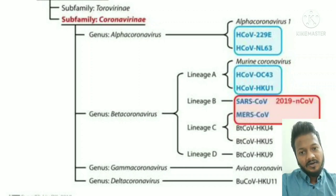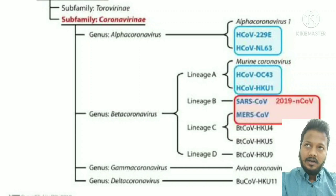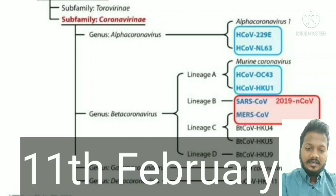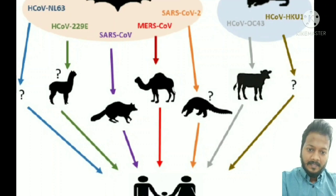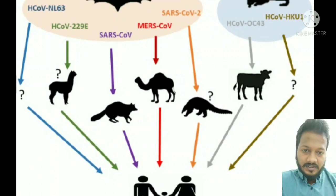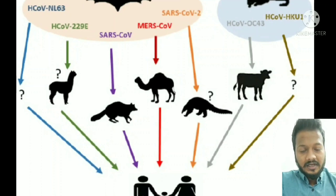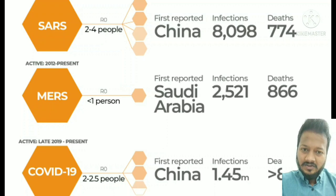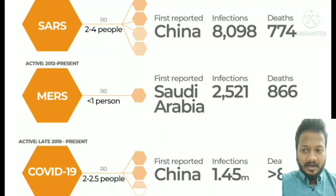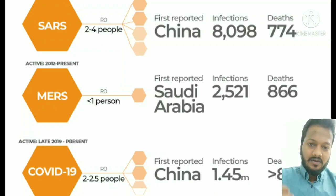Initially we named it novel coronavirus, but later around 11th March 2020, WHO declared the name as SARS-CoV-2. SARS-CoV, MERS-CoV, and SARS-CoV-2 — all three cause acute respiratory distress syndrome in humans. Let us look at the past of various corona outbreaks: 2002 by SARS-CoV, 2012 MERS-CoV, and in 2019 by SARS-CoV-2, novel coronavirus.